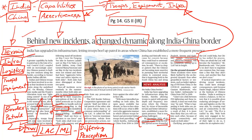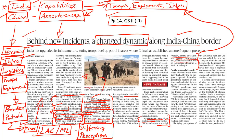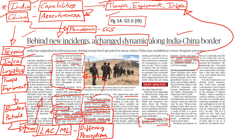Historically, China has enjoyed an advantageous position at the Indo-China border through friendly terrain, better infrastructure, better logistics, and more troops and equipment. But over the last 15 years, India has adopted a modernization drive, deploying more troops and equipment and building strategic infrastructure. By December 2022, India plans to complete all 61 strategic roads along the Indo-China border, spread across Arunachal Pradesh, Jammu and Kashmir, Sikkim, Ladakh, Uttarakhand, and Himachal Pradesh. This strengthens India's logistical capabilities to deploy forces at short notice.